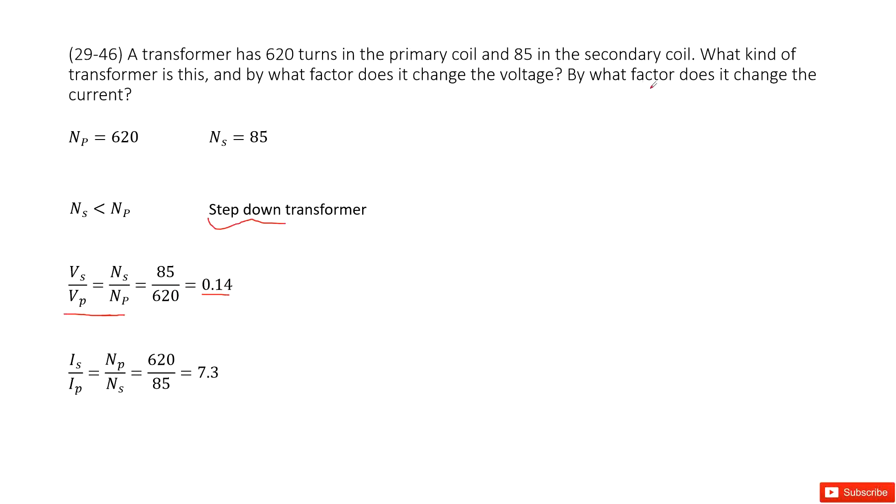And by what factor does it change the current? The secondary current over the primary current equals the primary turns over the secondary turns. This is a reverse relationship. So when you input Np and Ns, you get Is over Ip equals 620 over 85 equals 7.3. Thank you.